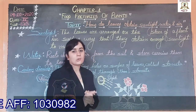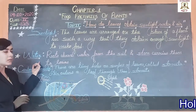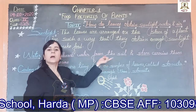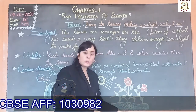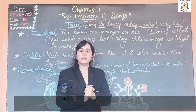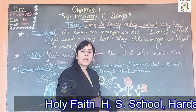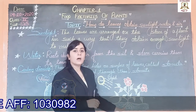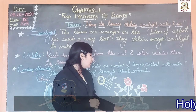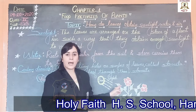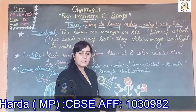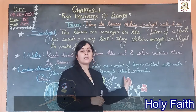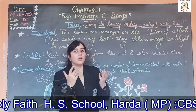Now the second one is water. We studied that roots absorb water from the soil. Roots have narrow tubes, and these tubes form a continuous network in the whole plant. So water travels through these tubes and reaches the leaves and other parts of the plant.